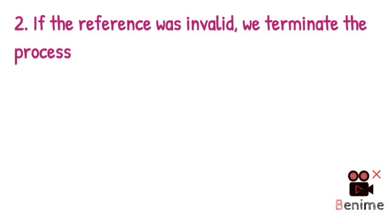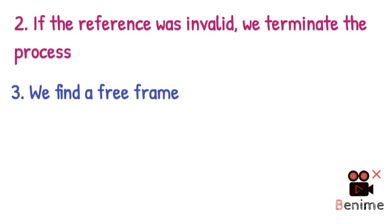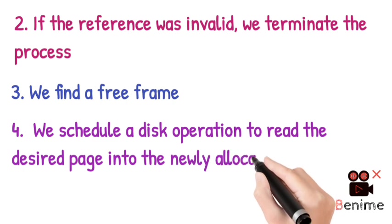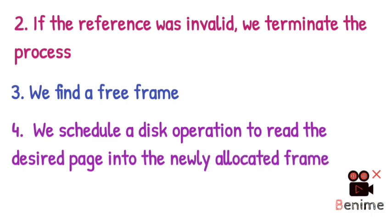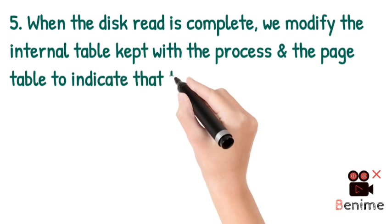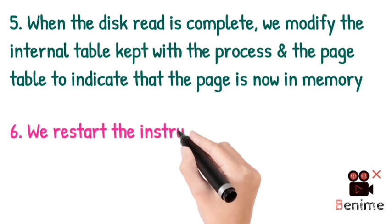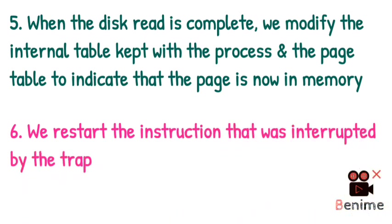Because the reference is valid, we first find a free frame. Once a free frame is present, we schedule the disk operation so that we can read the desired page into the new frame allocated. When the disk read operation is complete, we modify the internal table and the page table to indicate that the page is now in memory. Then we restart the interrupted instructions so the process can access the page, which is now present in memory.